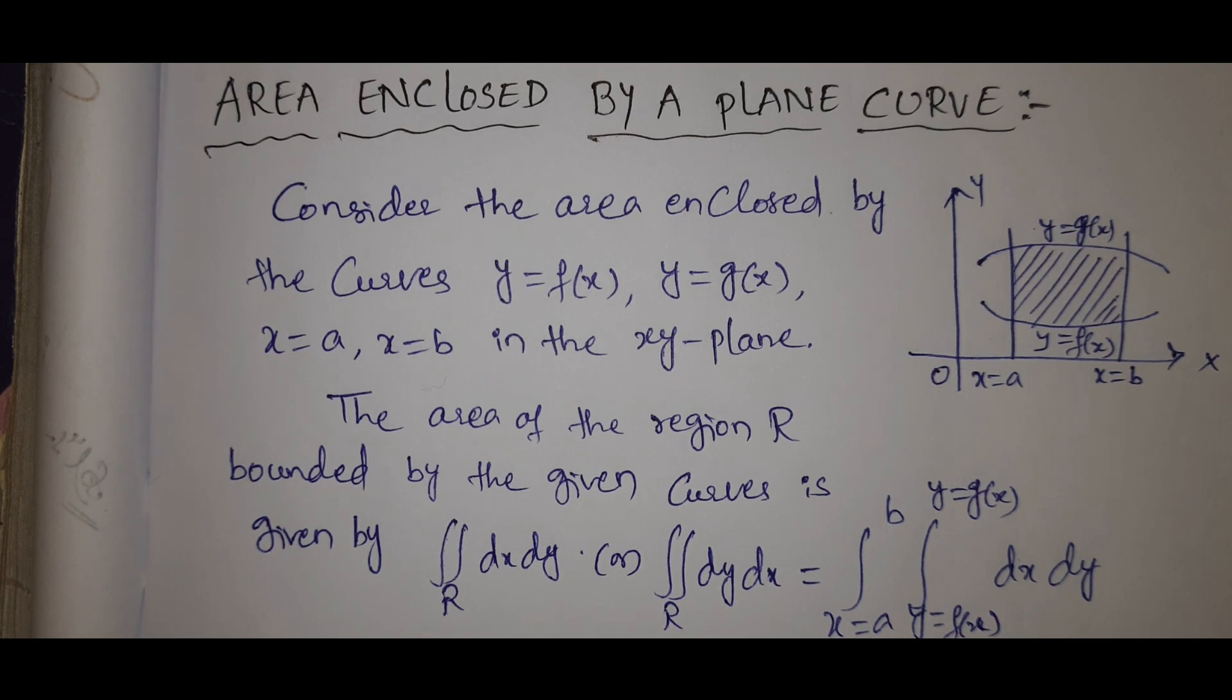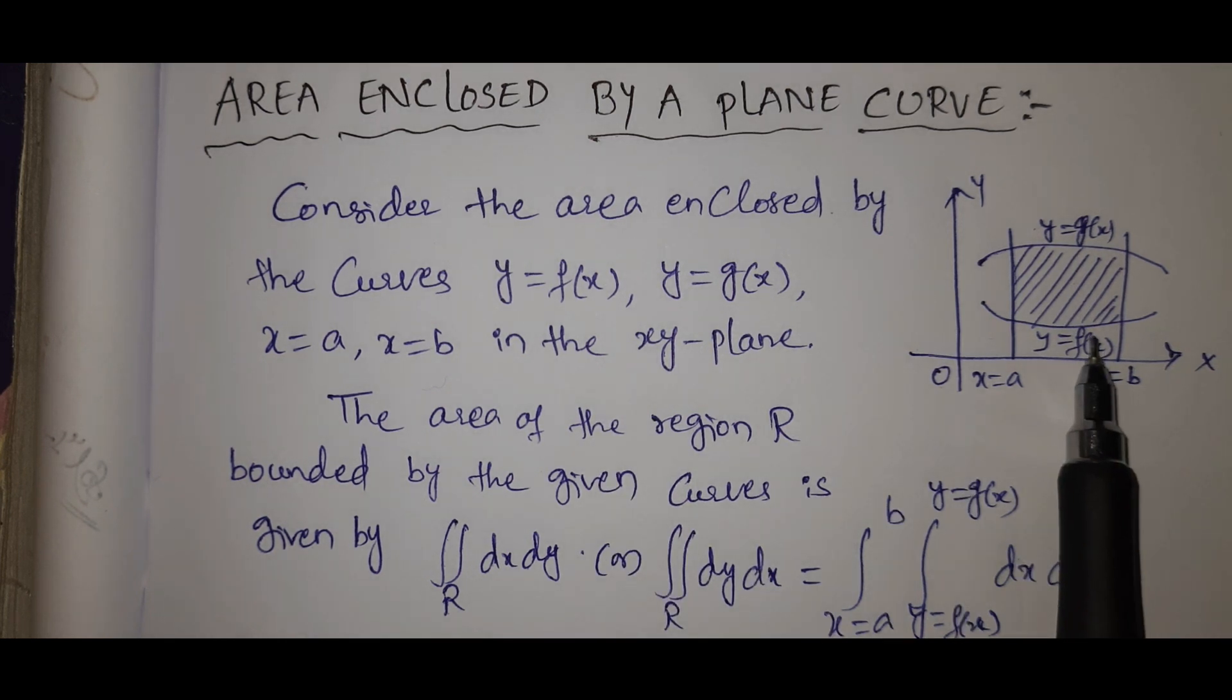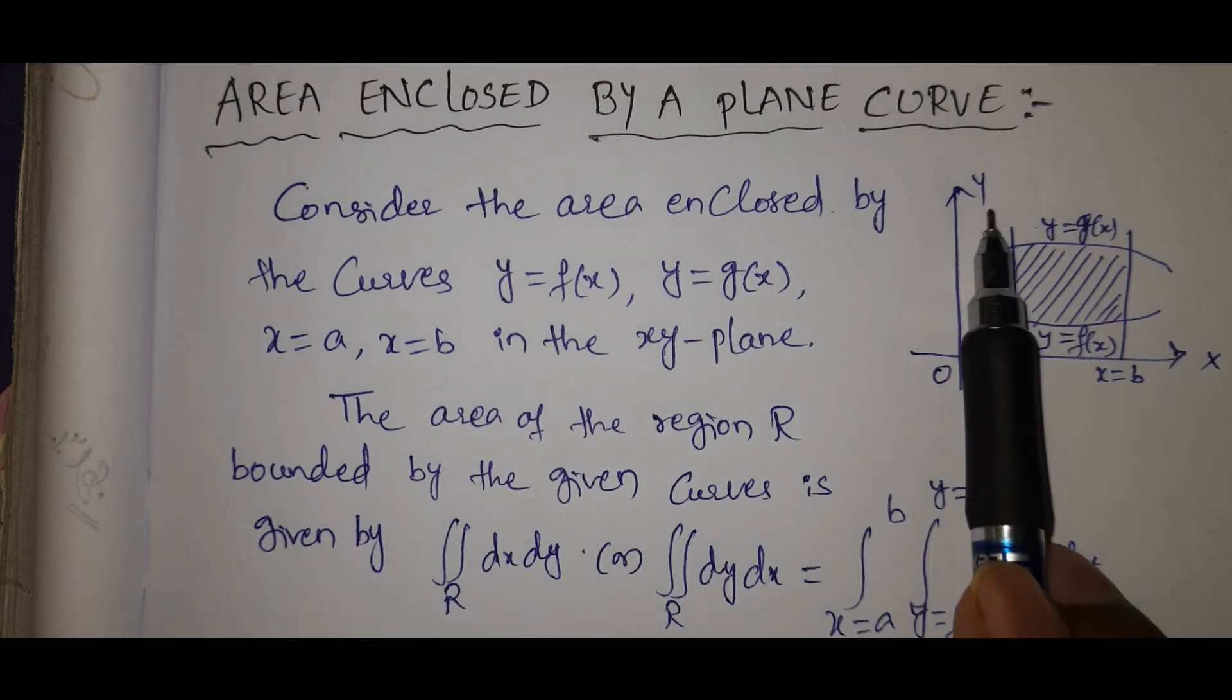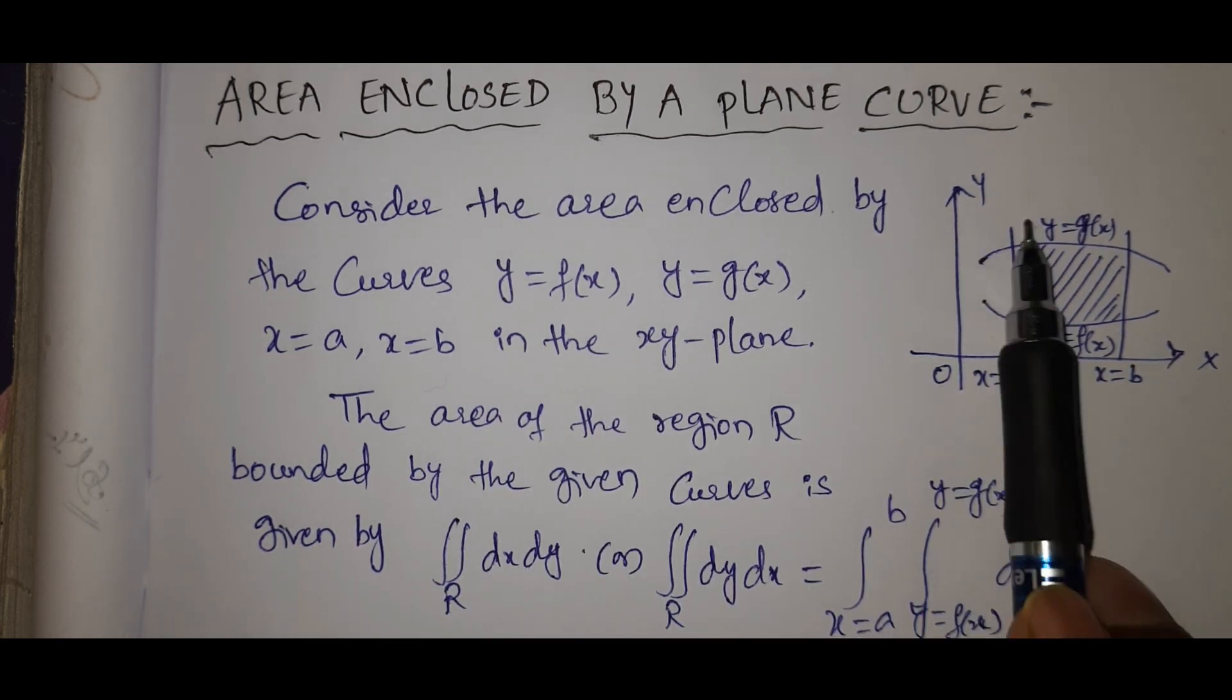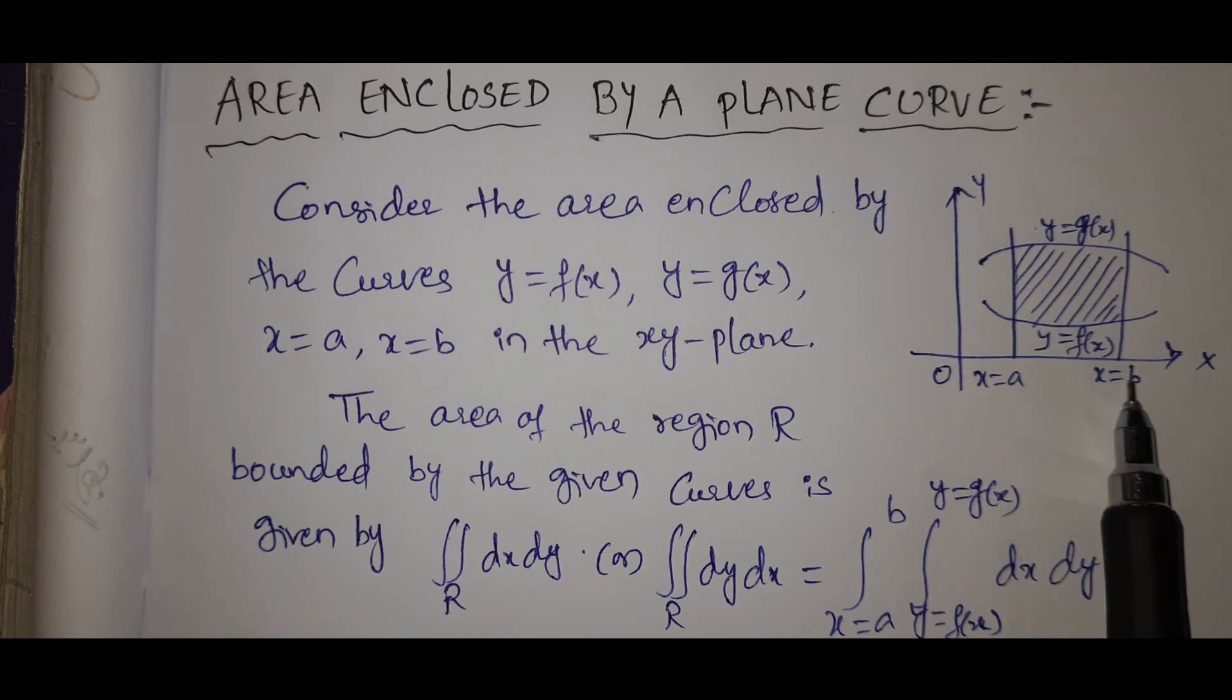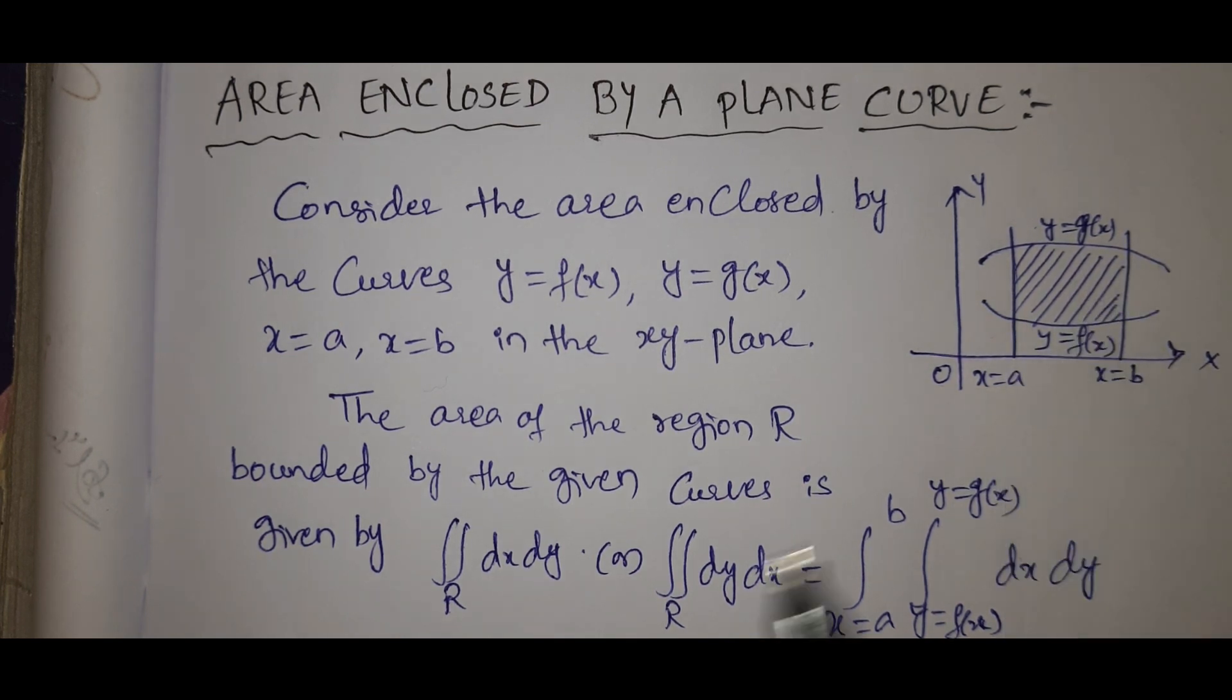Consider the area enclosed by the curves y = f(x), y = g(x), x = a, x = b in the xy plane. This is x axis, this is y axis. This is the line x = a, x = b. Two lines.